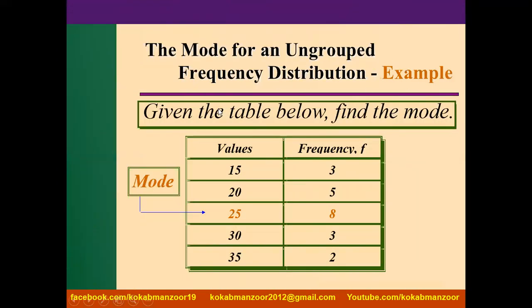Similarly, if we have ungrouped frequency distribution, here we have x values of 15, 20, 25, 30, and here is the frequency. Something occurring 3 times, something occurring 5 times, then 8, then 3 and 2. So which is the mostly occurring value? 15 occurs 3 times, 20 occurs 5 times, 25 occurs 8 times, 30 occurs 3 times, and 35 occurs 2 times. So this means 25 is the mode because it is the most frequently occurring value.